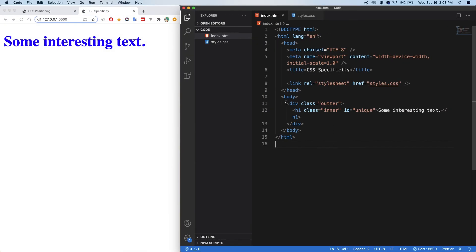Alright, now for the code. So we have an outer div here with a class of outer and an H1 on the inside with a class of inner and an ID of unique.